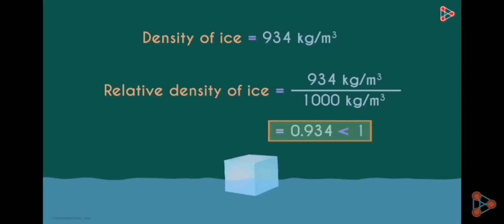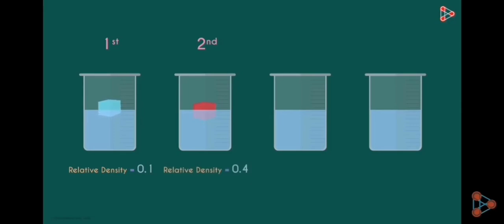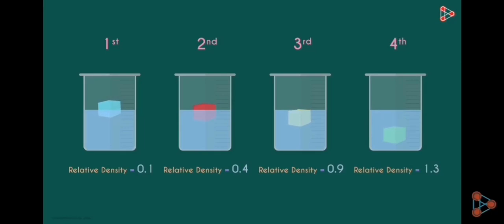We can understand this with a simple diagram. Take four beakers filled with water. In the first one, drop a substance with a relative density of 0.1 — you'll see it floats near the top. With a relative density of 0.4, more of it is inside the water. At 0.9, even more is submerged, but it still floats. If the relative density is greater than 1 — say 1.2 or 1.3 — it will sink.